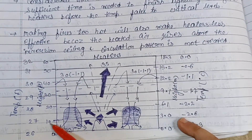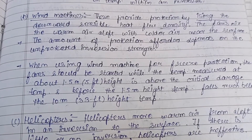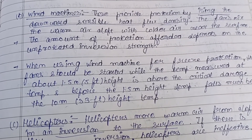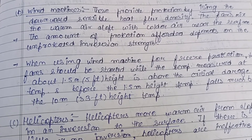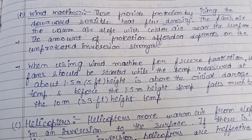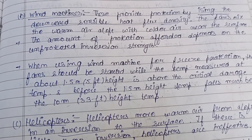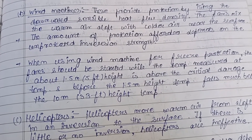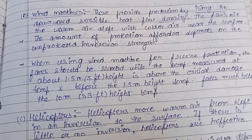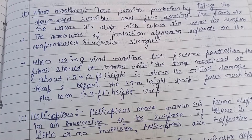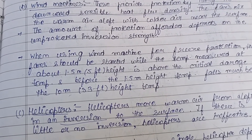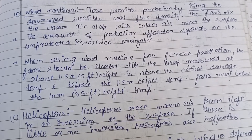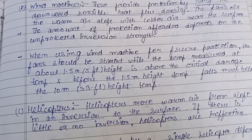Wind machines provide frost protection by increasing the downward sensible heat flux density. Fans mix warm air aloft with colder air near the surface. The degree of protection depends on inversion strength. The fan should be started when the temperature measured at approximately 1.5 meters (5 feet) height approaches the critical damage temperature and before it falls much below the temperature at 10 meters (33 feet) height.